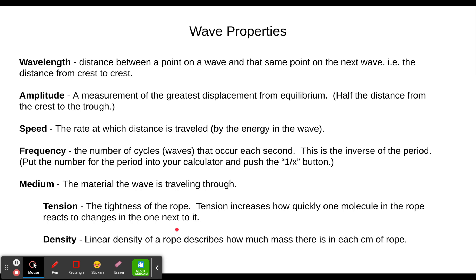Density — in this case we're talking about linear density of the rope — describes how much mass there is in each centimeter of the rope, or each inch, or each meter, however you want to look at that.